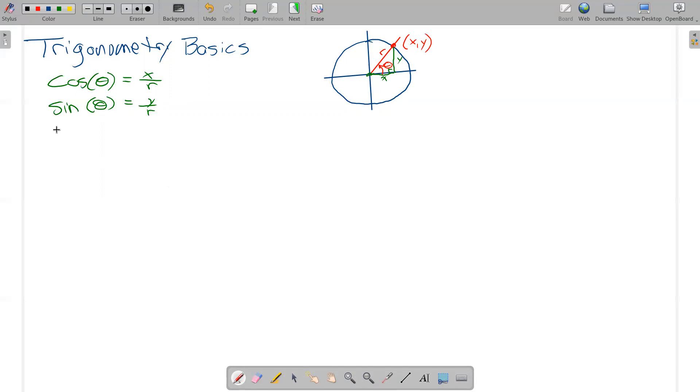We picked up some new trig functions the other day: tangent, abbreviated TAN, of the angle, which is the y value divided by the x value. We grabbed another function called the secant theta, which is the radius divided by the x value. We also got the cosecant, CSC cosecant of theta, and that one is the radius divided by the y value. And then we got the cotangent COT theta, and that one is x over y.